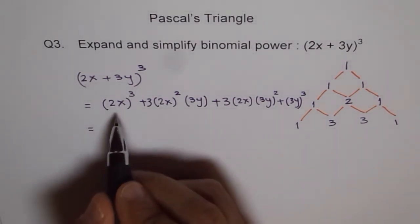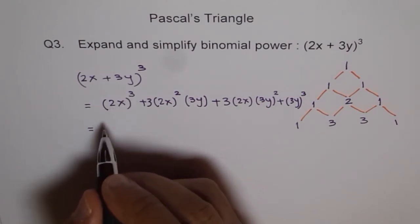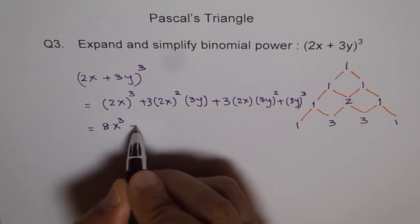And now let's try to simplify it. When we say (2x)³, then it becomes 2³x³. 2³ is 8, so let's write 8x³.